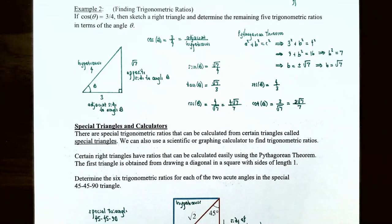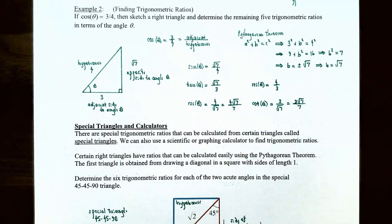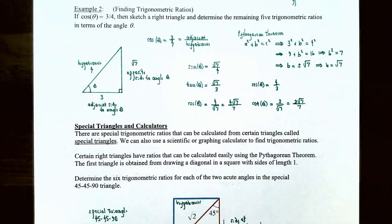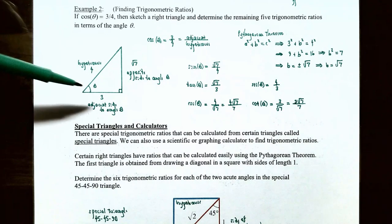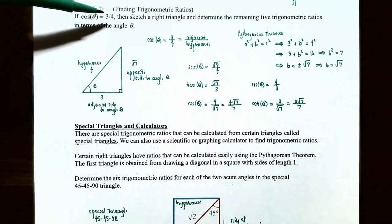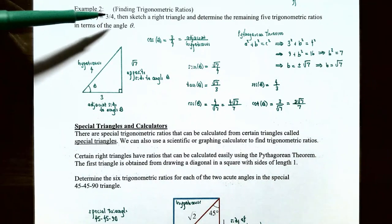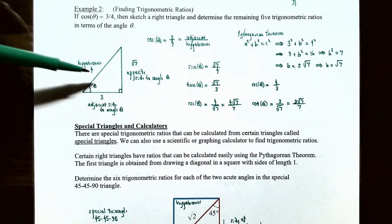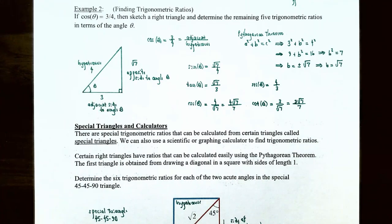Now let's try Example 2. If cosine of theta is 3/4, sketch the right triangle and determine the remaining five trigonometric ratios. Since cosine is adjacent over hypotenuse, the adjacent side has length 3 and the hypotenuse has length 4. We need to use the Pythagorean theorem to find the length of the opposite side.